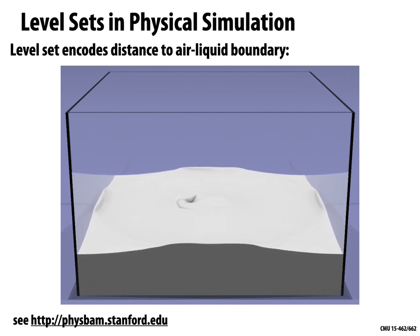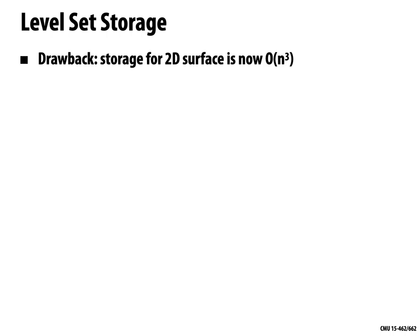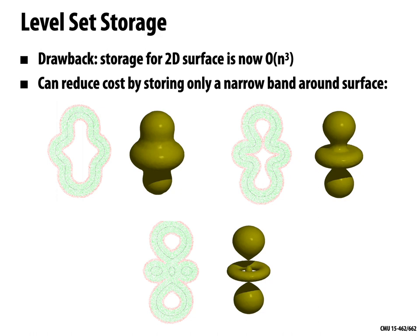Grid-based level sets are extremely important for real-world problems. For medical data — CT or MRI — level sets of constant value describe things like constant tissue density, letting you extract bones, blood cells, or other features from a medical scan. Level sets also show up in physical simulation; a common example is fluid simulation, where a level set describes where air and water are — negative inside water, positive in air, and zero exactly where the surface of the water should appear. A big drawback of grid-based level sets is storage: you're storing order n³ pieces of information, which is costly not only for storage but also computation. A common solution is to store just a narrow band of grid cells around the surface using a sparse data structure.